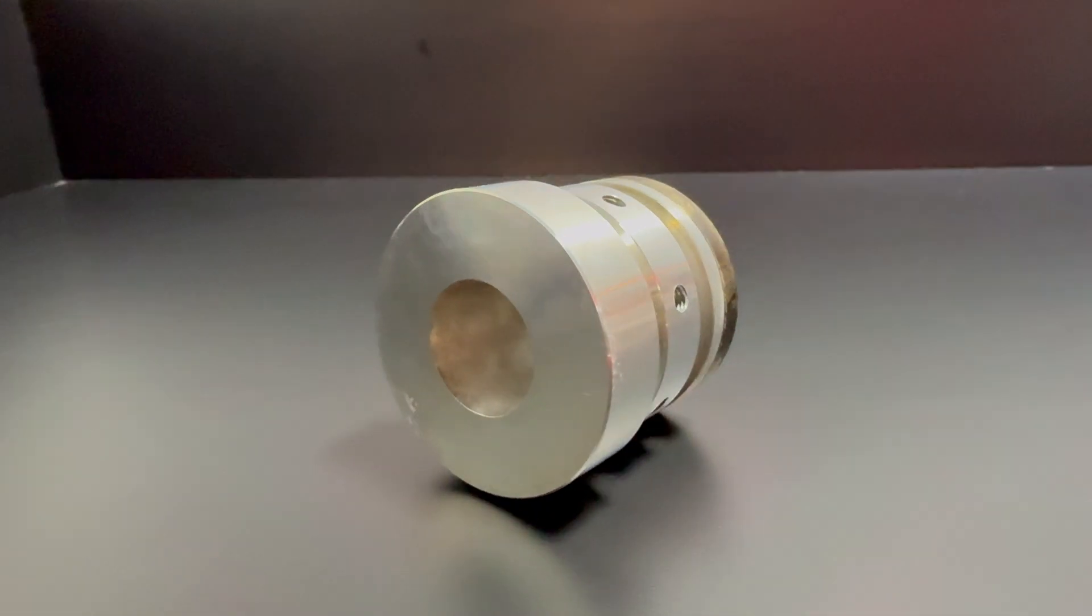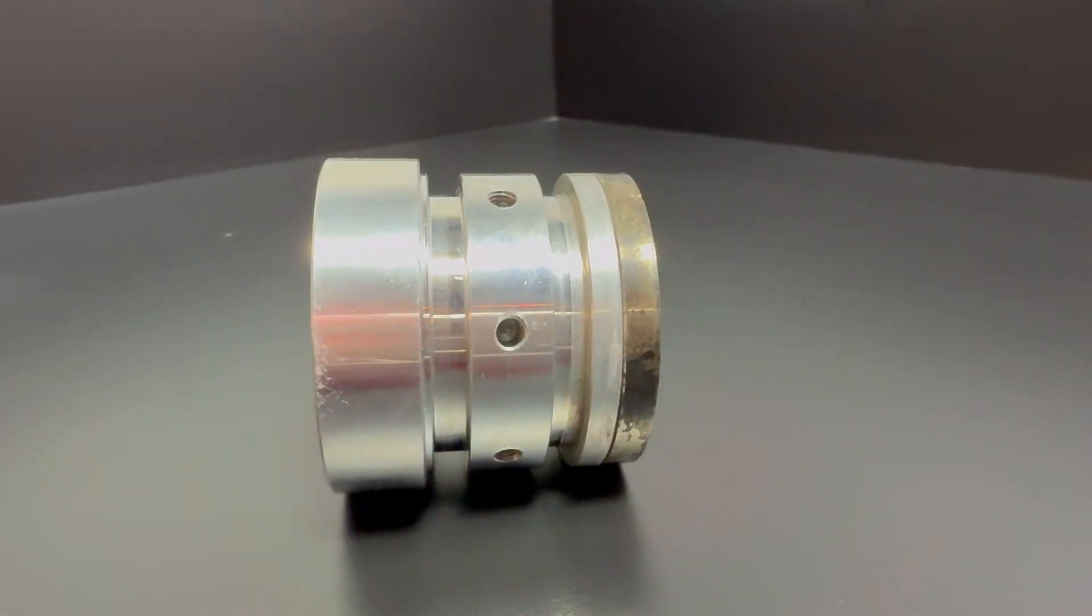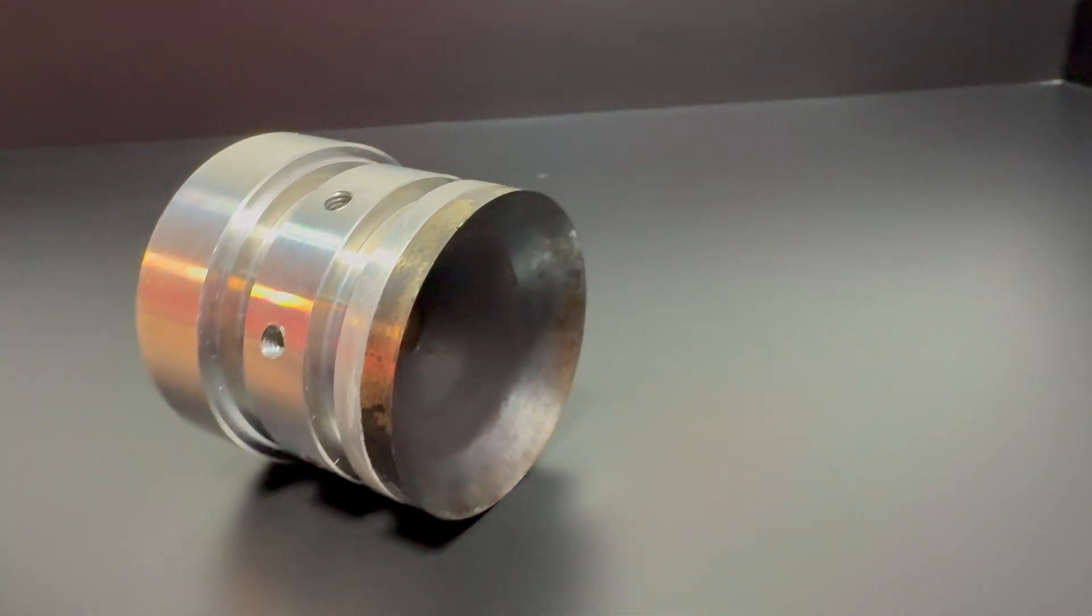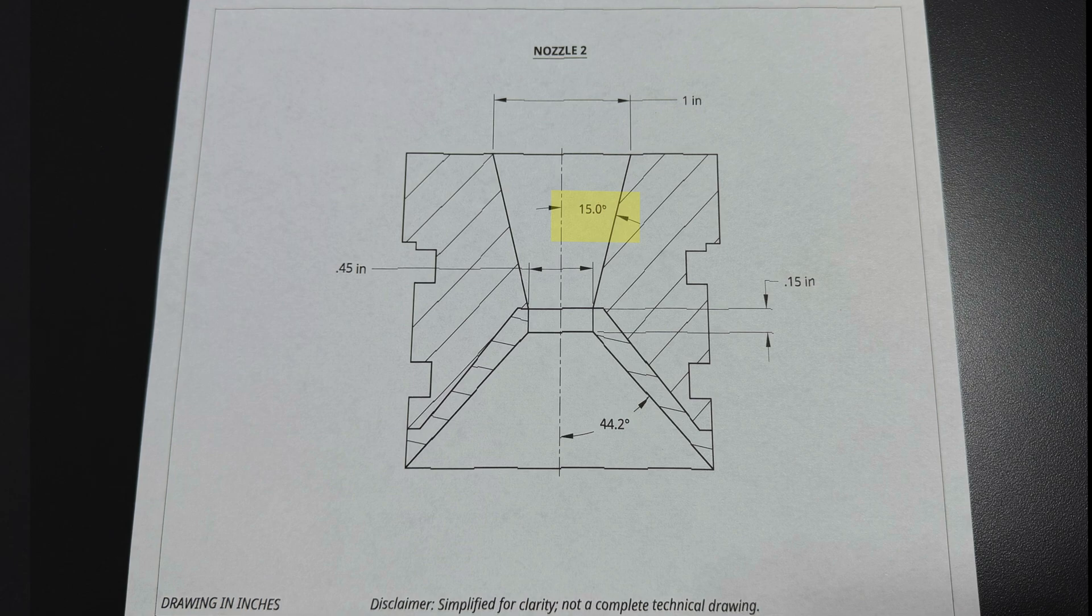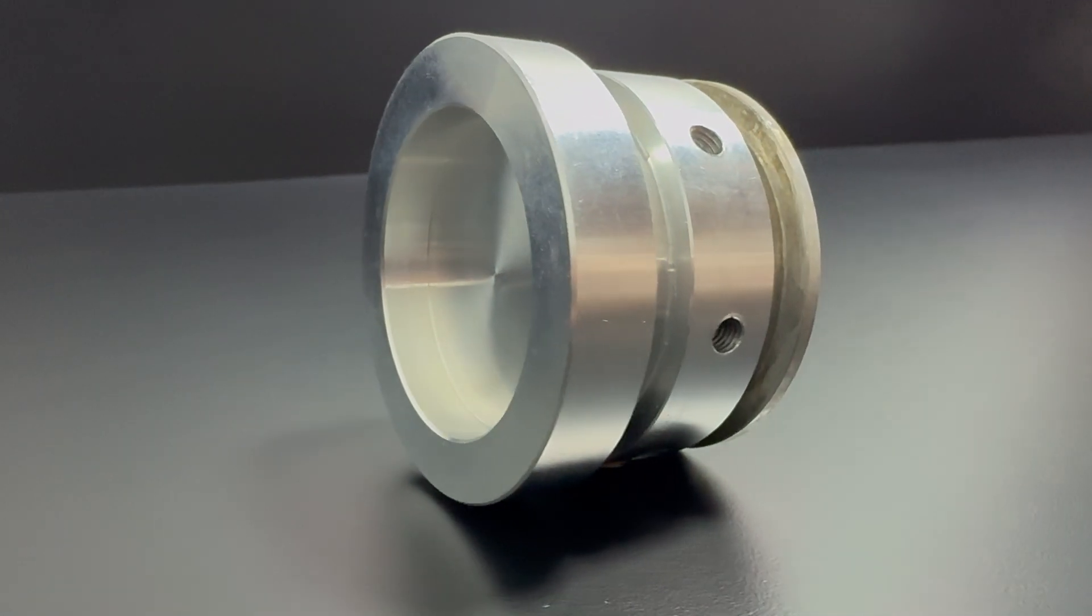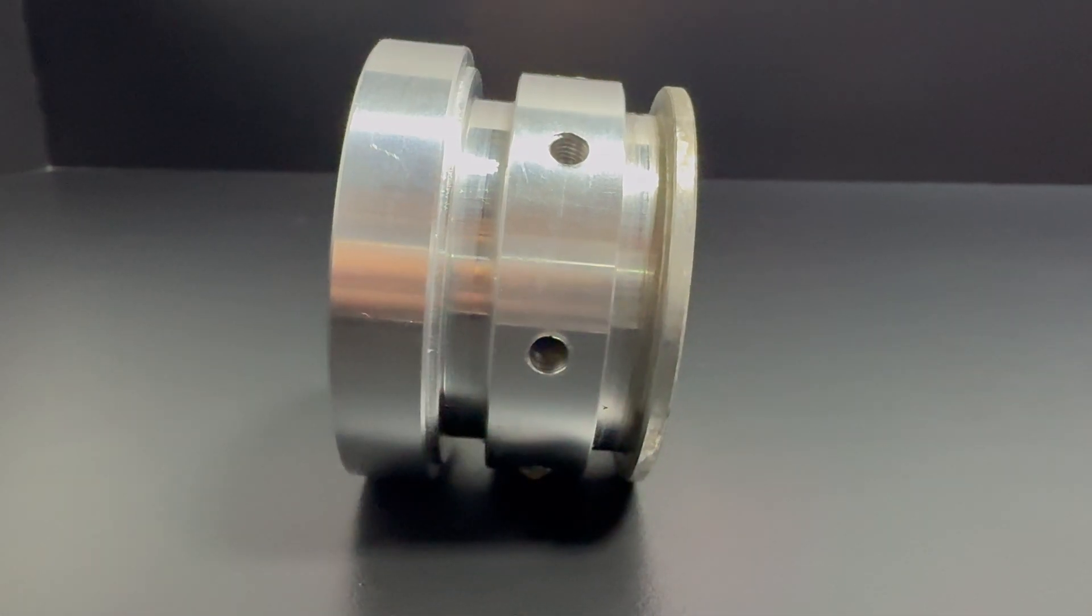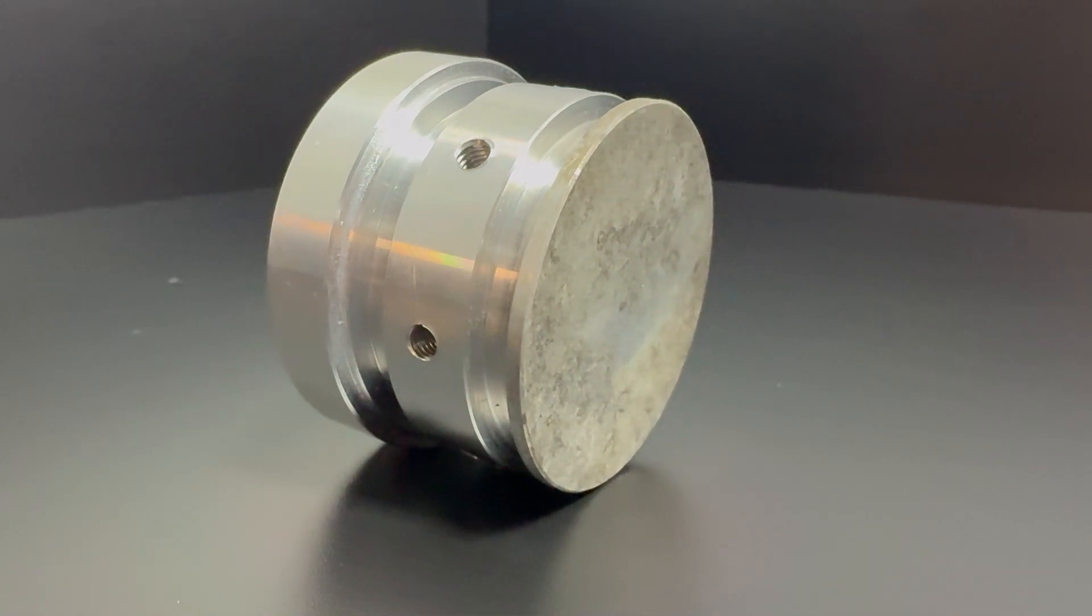After identifying the heat damage on SN1's nozzle, SN2 included an aluminum nozzle with a stainless steel insert. This nozzle featured a 44.2 degree converging half angle and a 15 degree diverging half angle. The throat diameter was 0.45 inches with a length of 0.15. The bulkhead designed for SN2 was very similar to SN1, retaining the use of two O-rings for sealing.